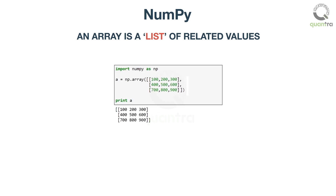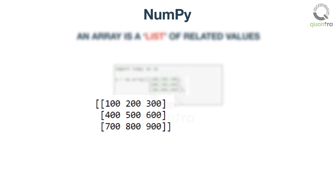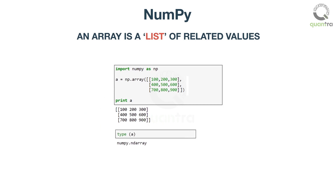Consider this example to understand the anatomy of an array. Here, we have used the np.array constructor function to create this two-dimensional array out of three individual lists. What we mean by two-dimension is that the data is stored across two axes — one for the rows, and the other for the columns. The object A is of the array data type, while the elements within this array are of the same data type, integer.